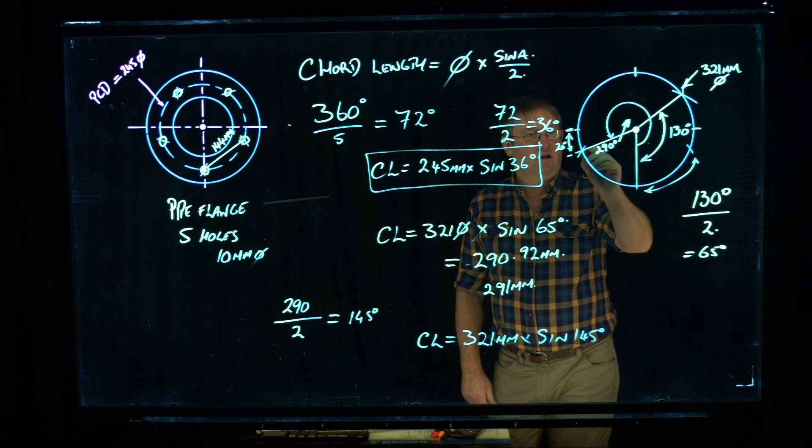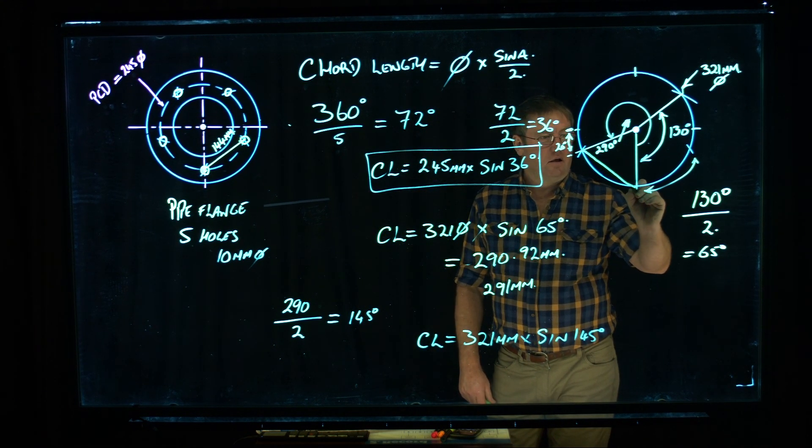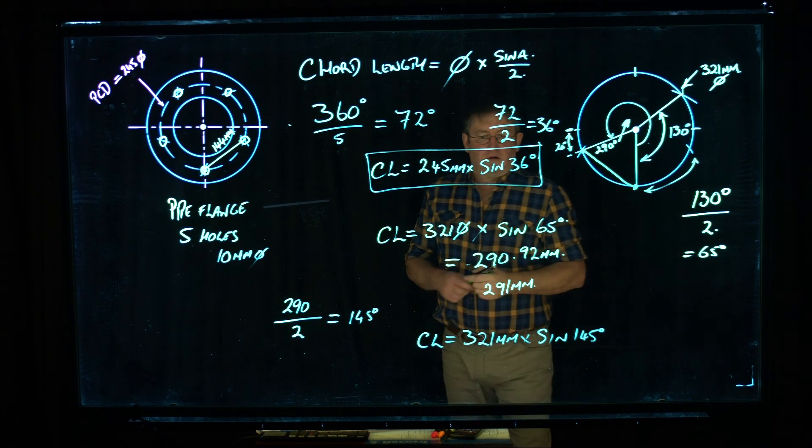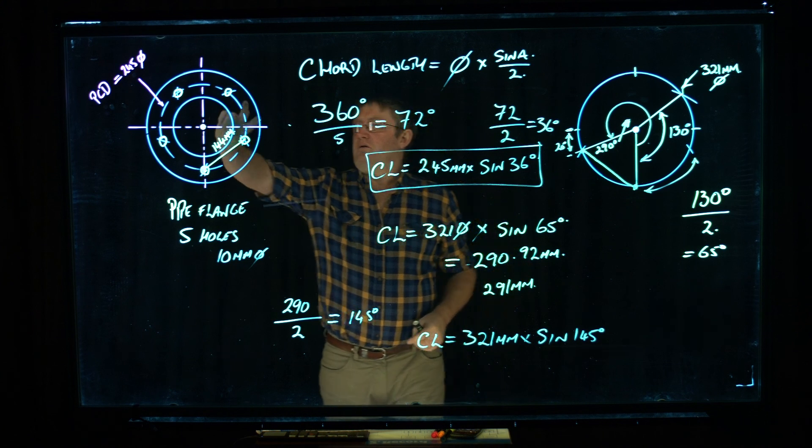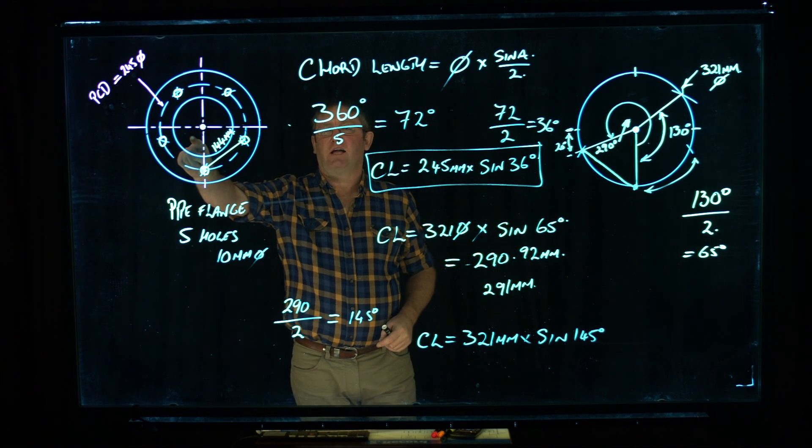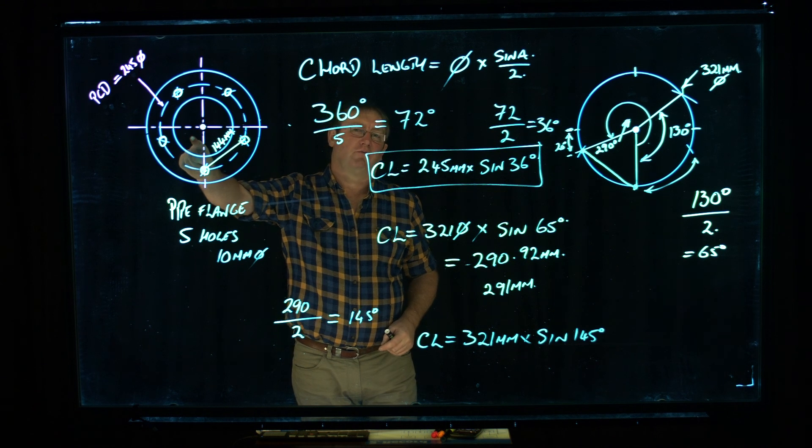Which is, as I said, a straight line length across a circle from one point to another. So you can use it to draw points on a circle for drilling holes on a flange, for a weld-on flange, or a screw-on flange onto a pipe.